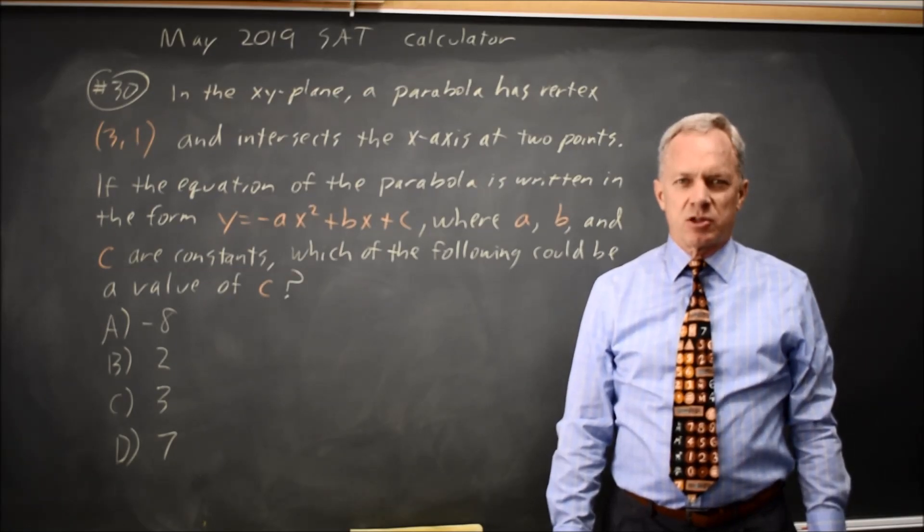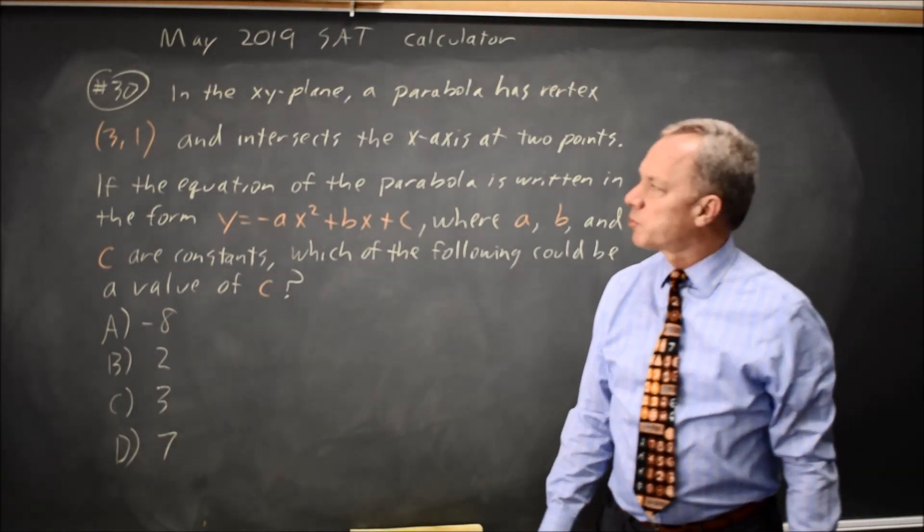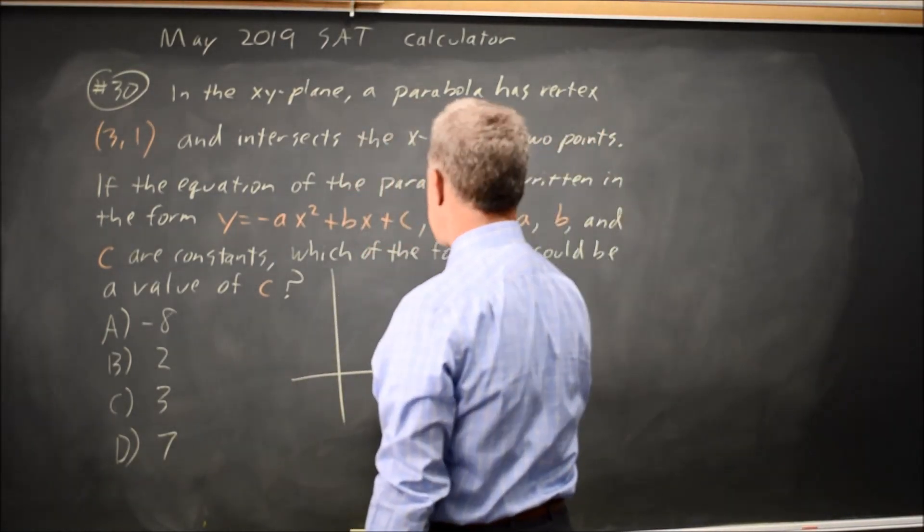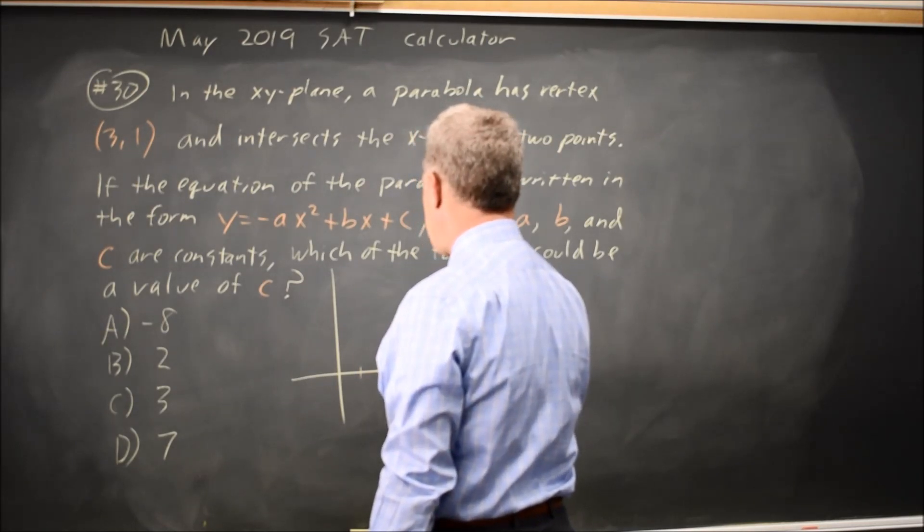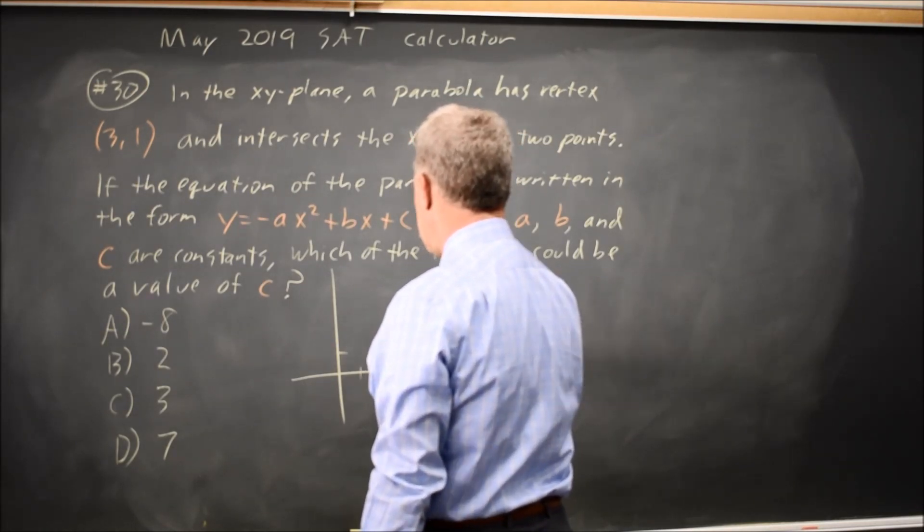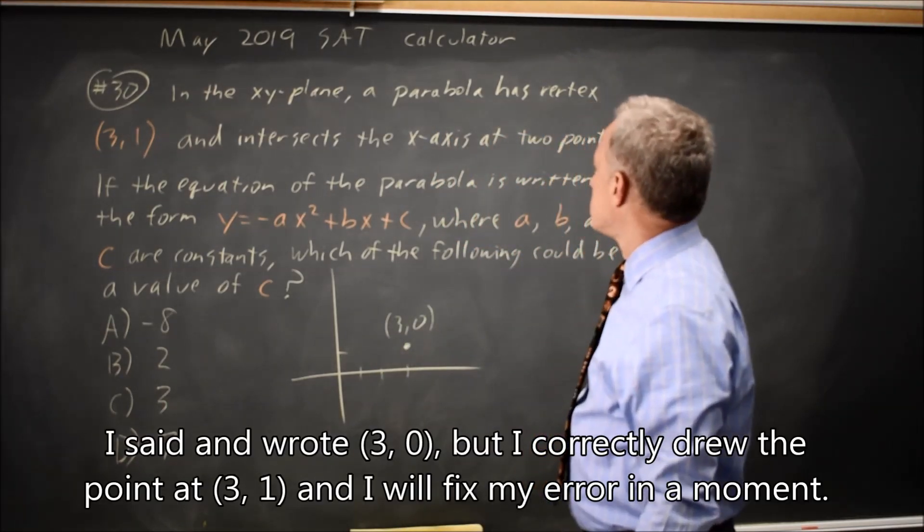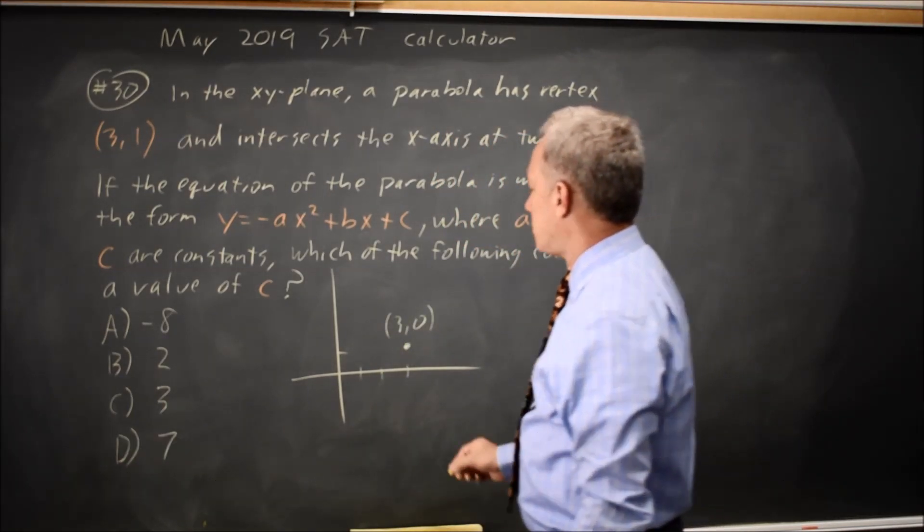This is Calculator Question Number 30 from the May 2019 International Exam. College Board describes a parabola that has a vertex at x equals 3, y equals 0, and has two x-intercepts, which means it opens down.